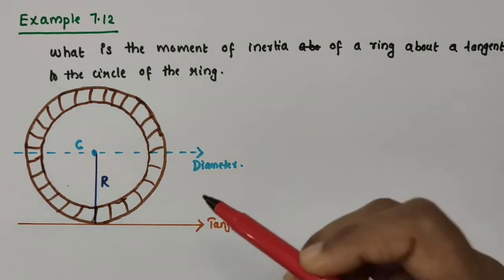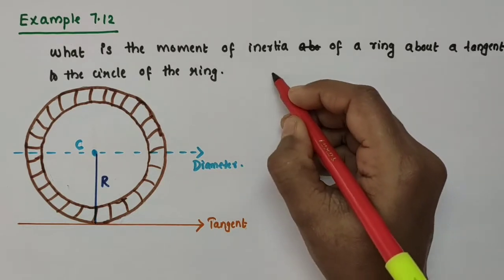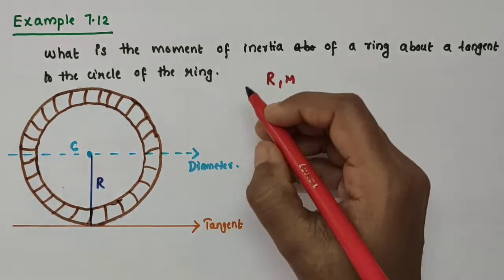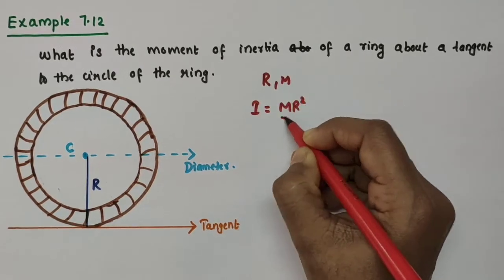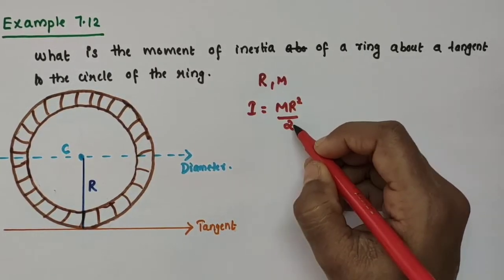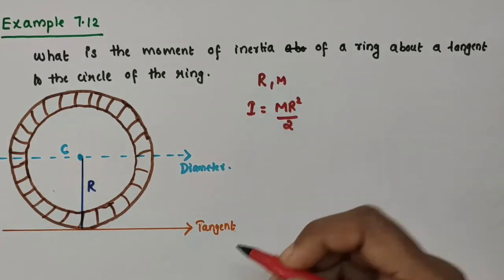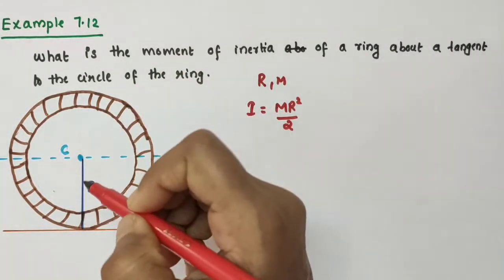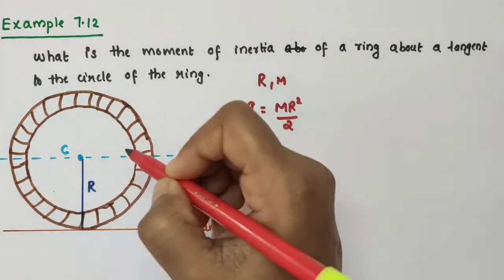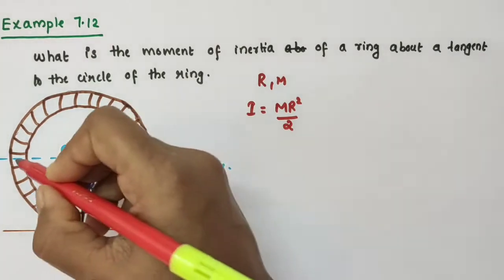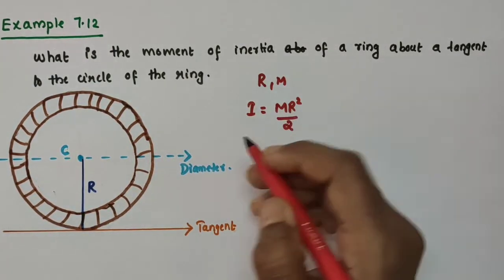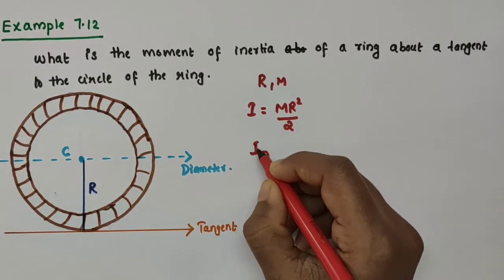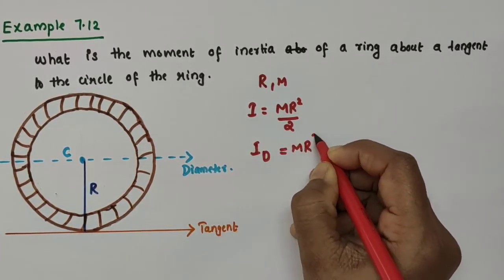We know that the moment of inertia of a circular ring of radius R and mass M about an axis along its diameter is equal to I = MR²/2. This was discussed in our previous video — I will provide the link in the description box. So the moment of inertia about the axis along the diameter, which I am taking as I_D, is equal to MR²/2. This is equation number 1.